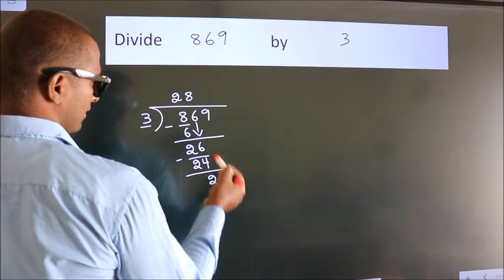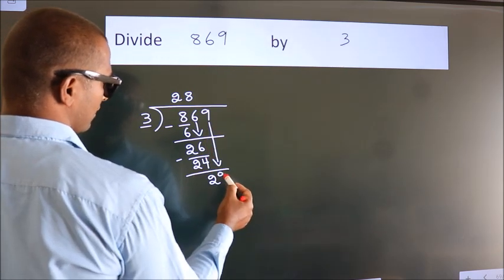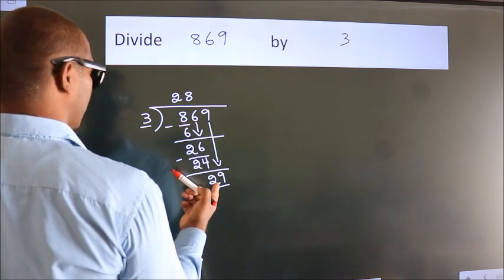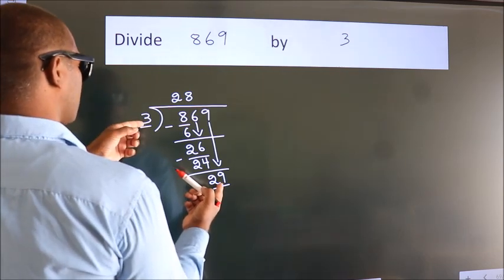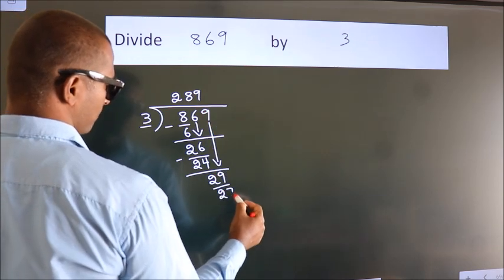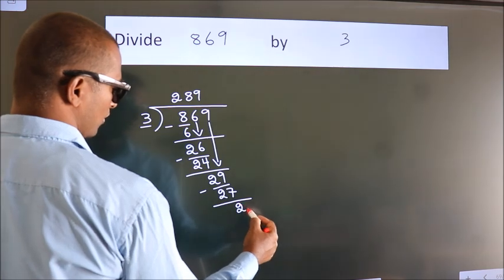After this, bring down the beside number. So 9 down, so 29. A number close to 29 in 3 table is 3 9s, 27. Now we subtract. We get 2.